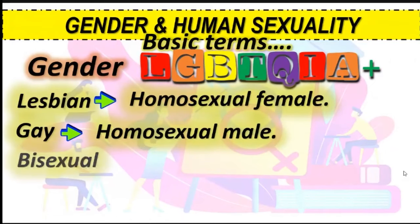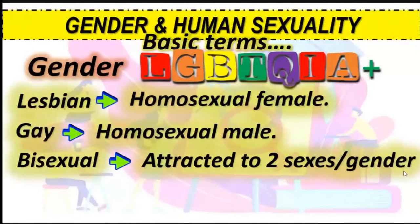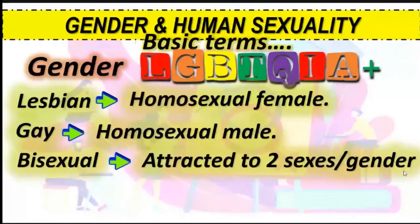The next gender is bisexual — a person who is emotionally, physically, or sexually attracted to two sexes or genders. For example, a female who is attracted to other females and at the same time attracted to males. That is what we mean by bisexual; bi means two.